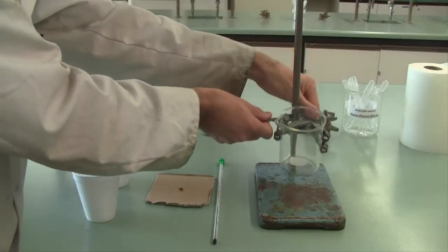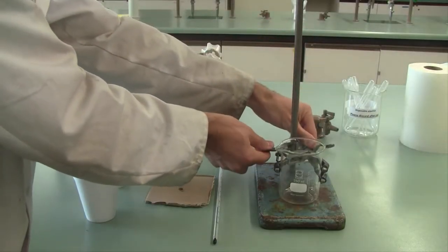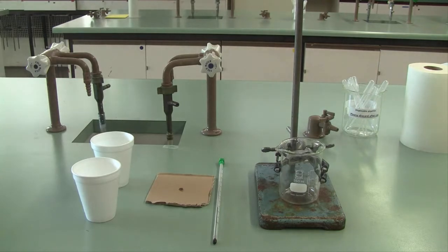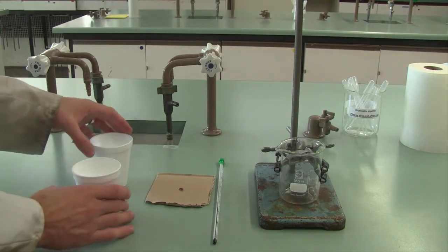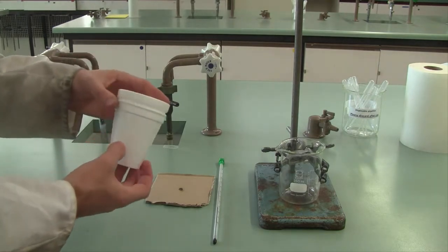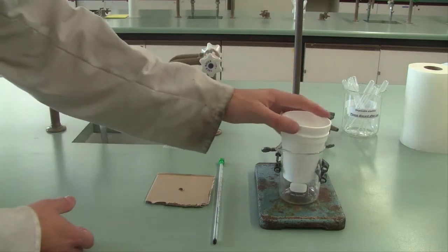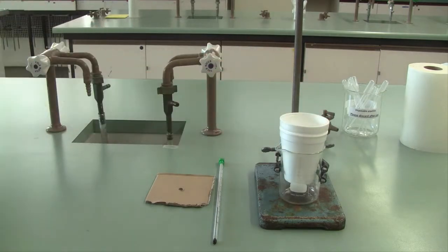Throughout today's experiments we're going to be using a homemade calorimeter. This is going to be prepared by attaching a beaker to a retort stand for stability. We're then going to use two polystyrene cups, one inside the other, as our insulated reaction vessel.